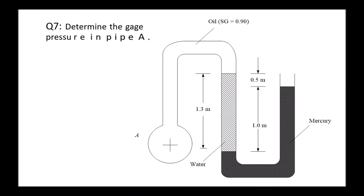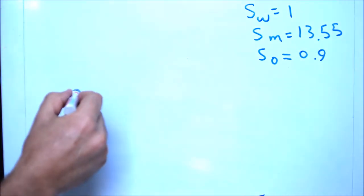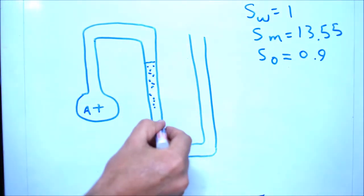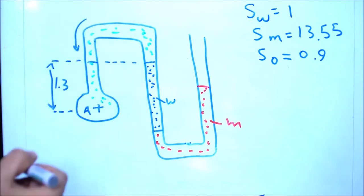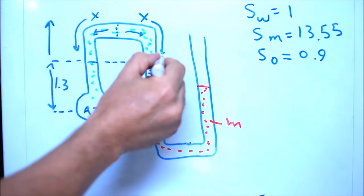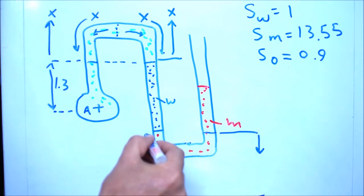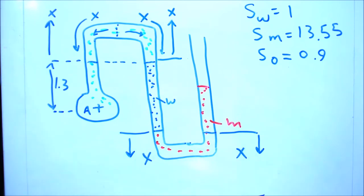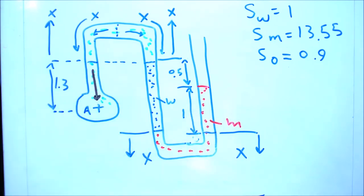Question seven: we have three liquids - oil, water, and mercury - arranged in the figure. Determine the pressure at point A. S water is 1, S mercury is 13.55, S oil is 0.9. A useful hint for all questions: if you have a U-shaped tube with the same liquid on both sides, you can cancel the pressure generated by the two sides. So we can cancel the U-tube shape containing the same liquid, and similarly cancel the U-shaped mercury section at the bottom.